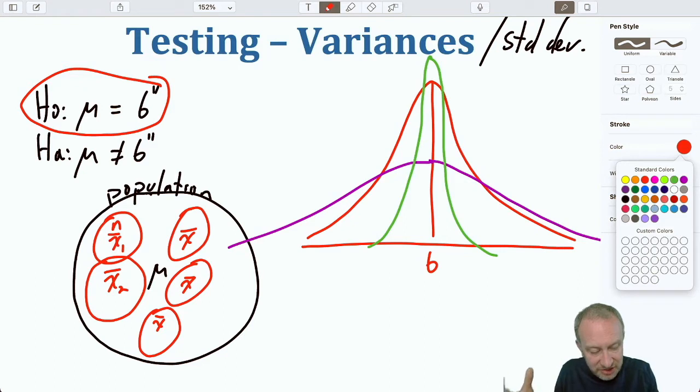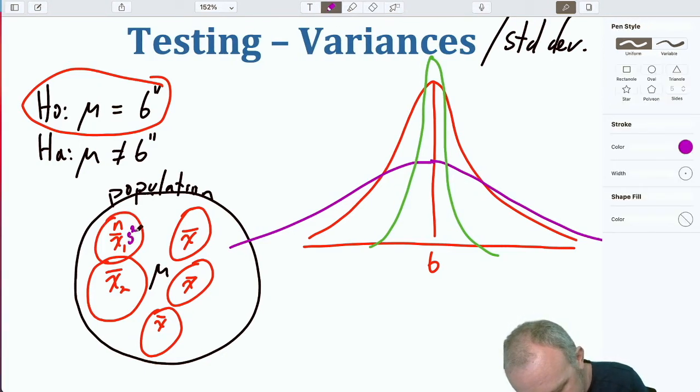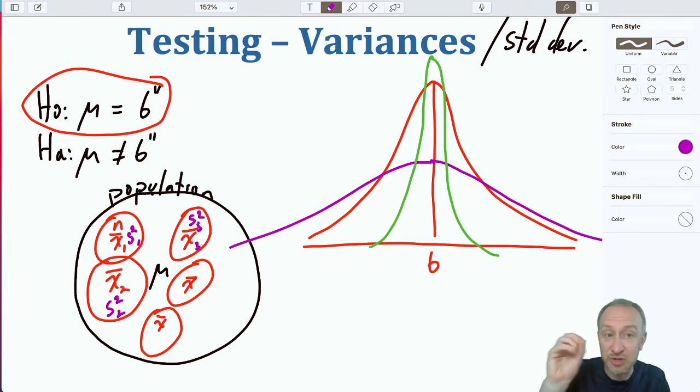If we think back to generally what we're doing, we have this population. We're taking samples from that population and so far all we've looked at is the sample mean. Well each of those samples also has a sample variance. With each sample that we draw, we can use the point estimate of the mean to do testing and analysis on the average. But we also can use the point estimate of the variance or the standard deviation to draw inference about the nature of that population variance.